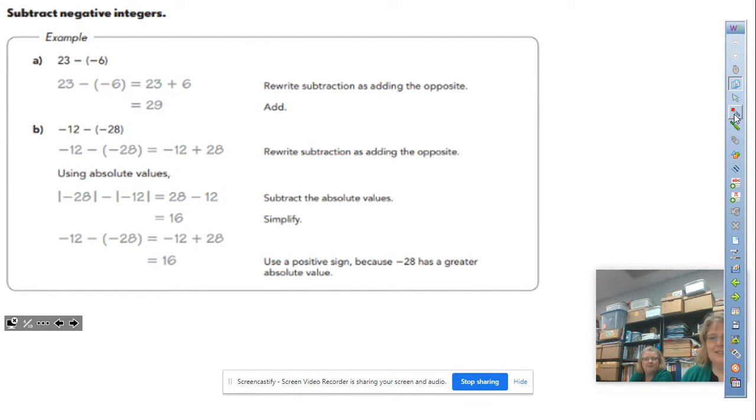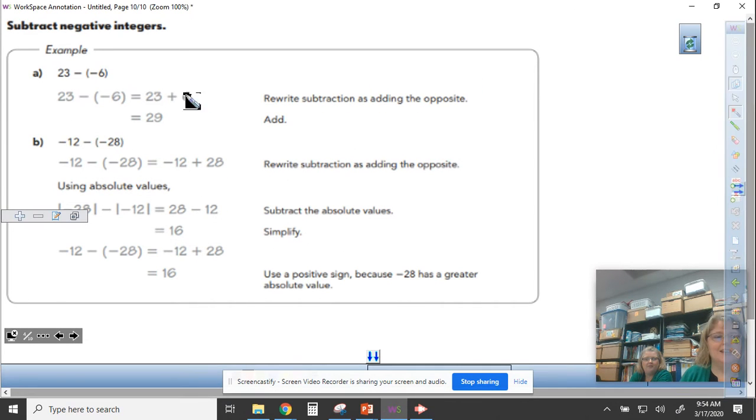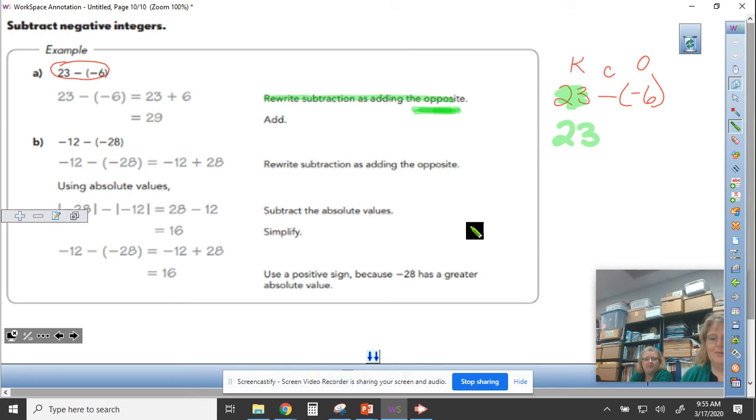On your next example we again are seeing that it says 23 minus a negative 6. And again it gives us the hint to rewrite the subtraction as adding the opposite. So again I'm going to keep change opposite. I am keeping this 23, I am going to change this subtraction to addition, and then I'm going to do the opposite of this negative 6. The opposite of a negative 6 is a positive 6, so now I have the problem 23 plus 6.